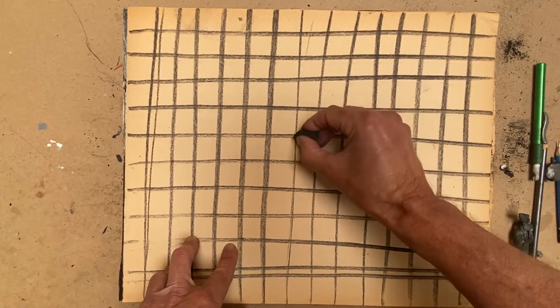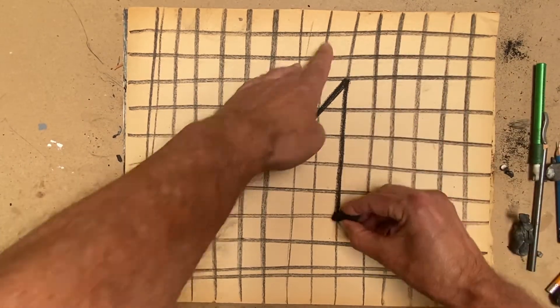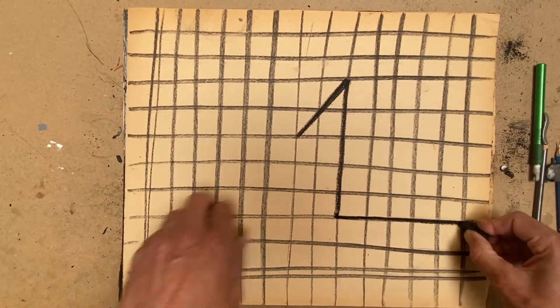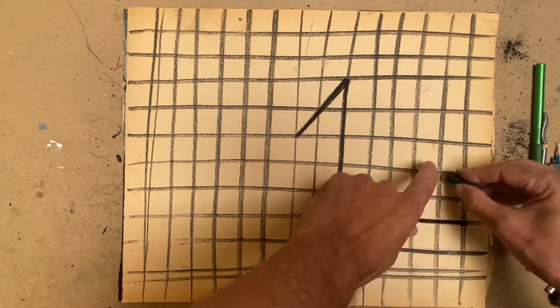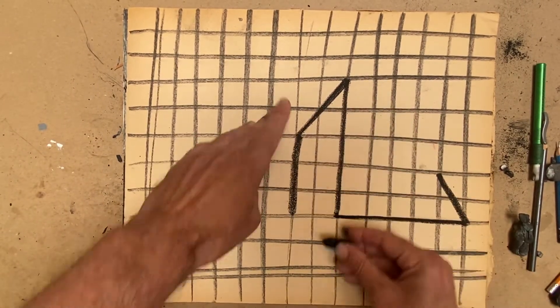And now what I'm going to do is I'm just going to start using the grid as the structure for whatever I do with the drawing. So I'm trying to connect different parts like this.